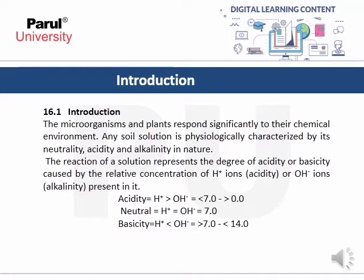Acidity is indicated when hydrogen ion concentration is greater than hydroxyl, with pH less than 7.0 down to 0.0. Neutral conditions exist when hydrogen equals hydroxide at pH 7.0. Basicity occurs when hydrogen is less than hydroxyl, giving a pH greater than 7.0 up to 14.